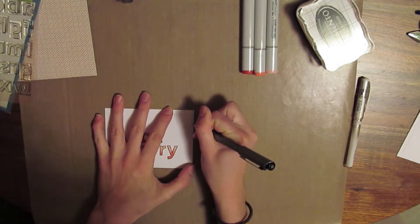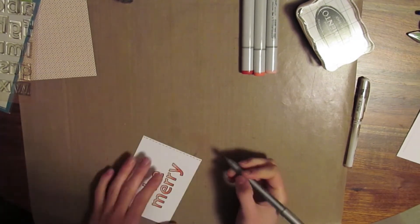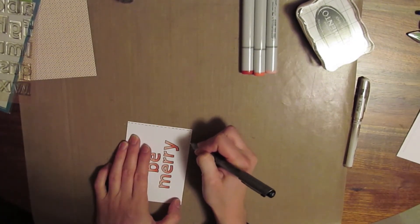So now I'm just taking a black Zig pen and making the faux stitching around the outside of it.